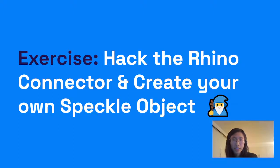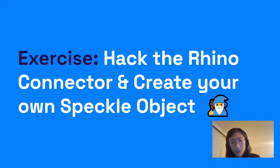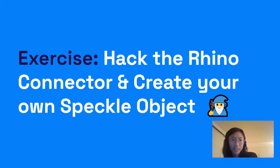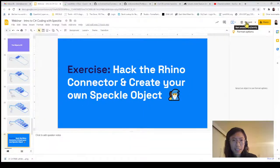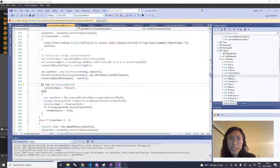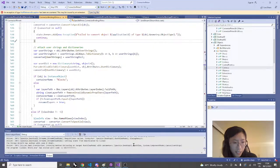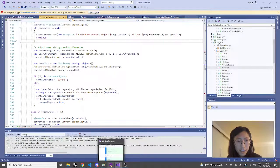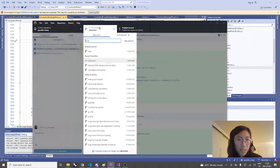Putting everything together, we're going to do a live coding session for hacking the Rhino connector and creating a simple Speckle object that inherits from one of the already-defined Speckle objects. Let me swap screens. I'm going to quickly show you GitHub Desktop — I've already added the SpeckleSharp repository there.